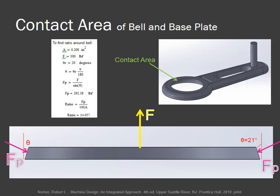In this slide, we made a SOLIDWORKS model of the crushing surface on the base plate. Using SOLIDWORKS, we found the area to be equal to 0.208 square inches. We then took the angle of the crushing surface, 21 degrees, and used trigonometry to convert the upward force from the lever arm into a ratio to find the crushing force.